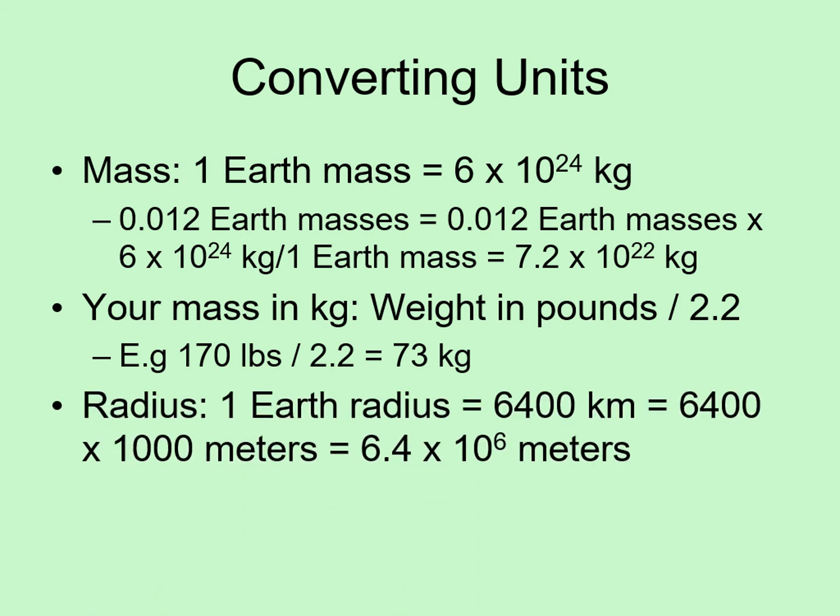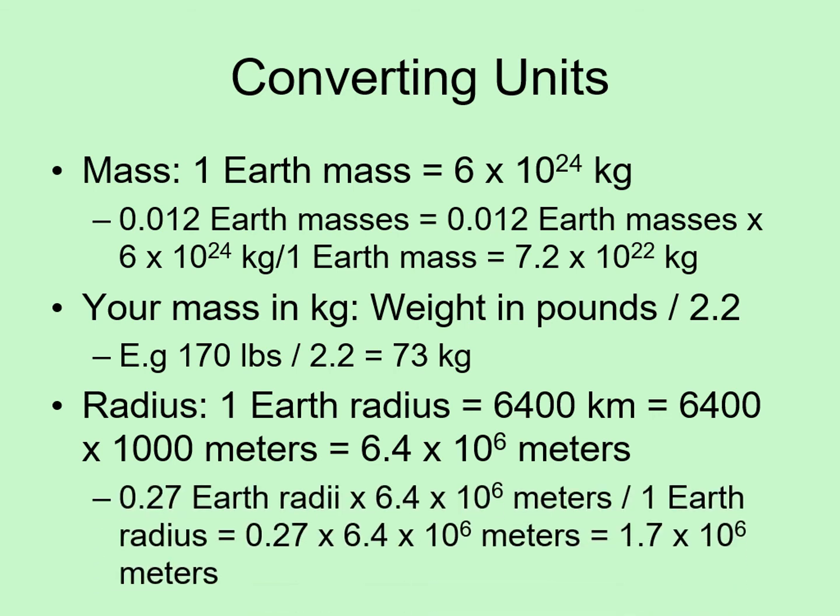The radius of the moon works similarly to the way that the mass did. We know that one Earth radius is 6,400 kilometers. However, we want our answer in meters, not kilometers. So we remember that one kilometer is 1,000 meters. This gives us one Earth radius is 6,400 times 1,000 meters, which equals 6.4 times 10 to the 6th meters. So we take the moon's radius, 0.27 Earth radii, and multiply that by the conversion factor, 6.4 times 10 to the 6th meters, divided by one Earth radius. This gives us 1.7 times 10 to the 6th meters.